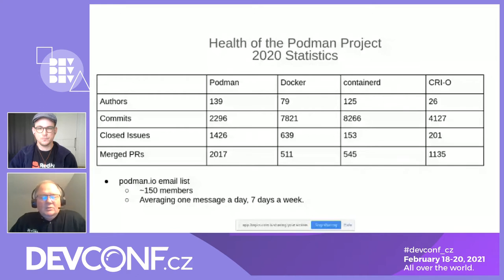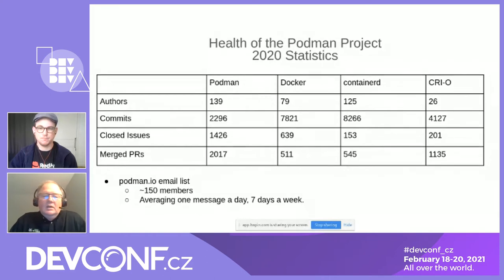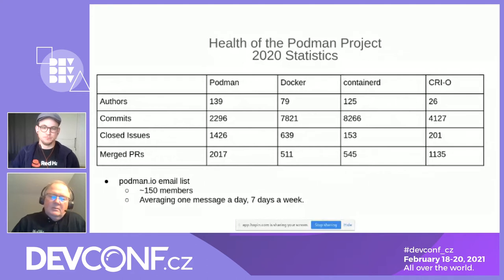The Podman mailing list has about 150 members right now. It's a fairly low-volume list — mainly announcements, but there is some discussion. You can get on it at podman.io. Most discussions also go on IRC at #podman on Freenode, and a lot of communications go through GitHub issues.